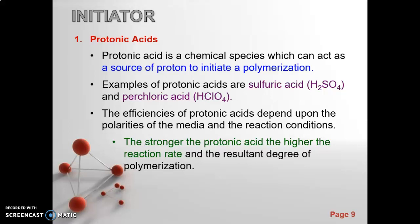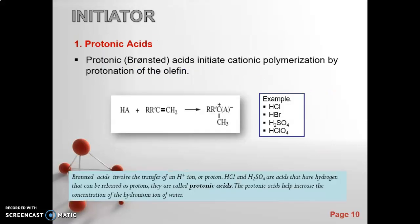The stronger the protonic acid, the higher the reaction rate and the resultant degree of polymerization. If we use a strong acid like H2SO4 compared to perchloric acid, it will lead to a higher degree of polymerization. Protonic or Bronsted acids initiate cationic polymerization by protonation of the olefin. This is the general reaction: protonic acid reacts with the monomer to produce positive and negative charges. Examples are HCl, HBr, H2SO4, HClO4.